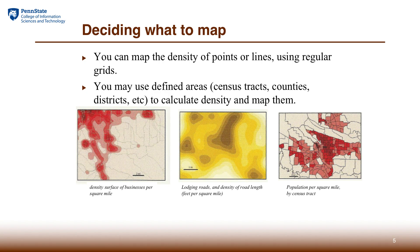Mapping density involves two things. One is the features of the things you want to map for density. The other is the area unit that you want to calculate the density for. Within a unit, we assume features are uniformly distributed, and between units there is a difference.